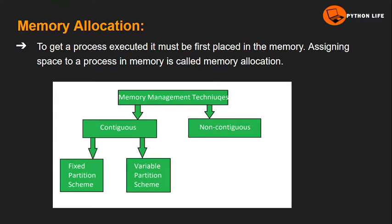This topic involves operating systems and processes. To get a process executed, it must first be placed in the memory. Assigning a space to your process in memory is called memory allocation.